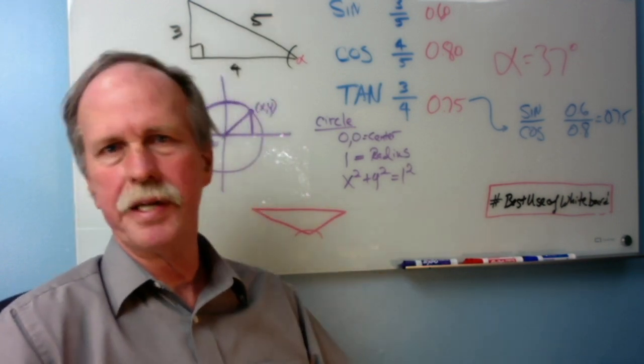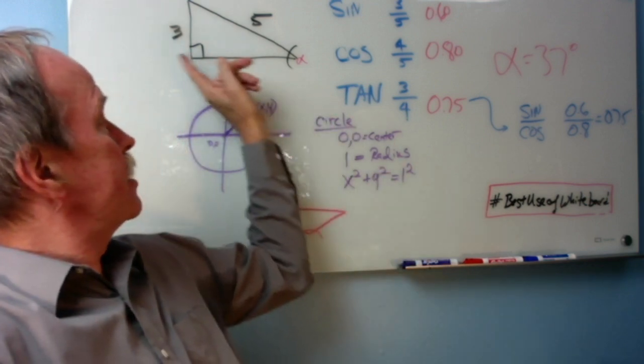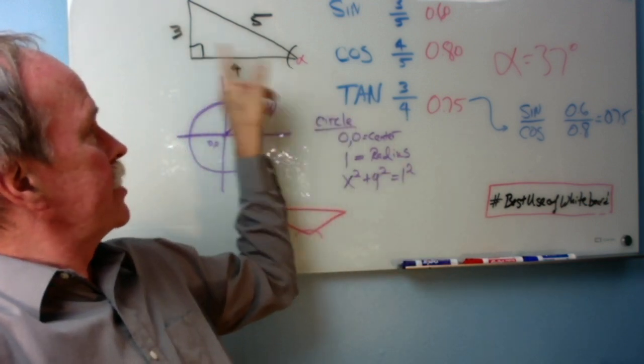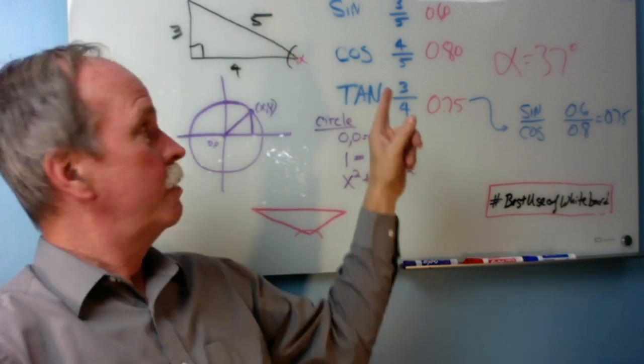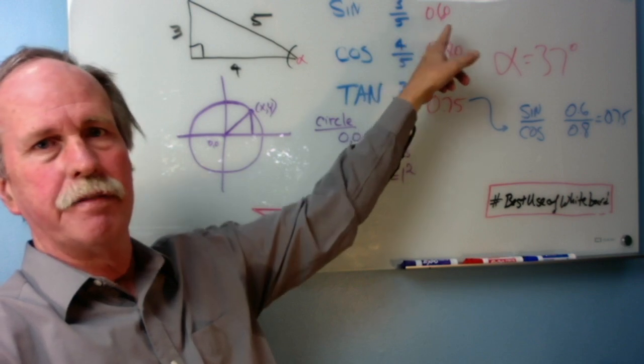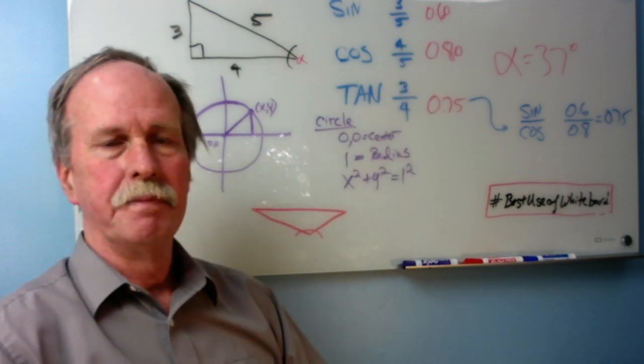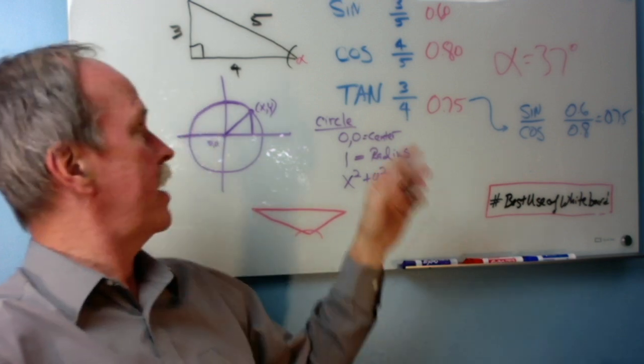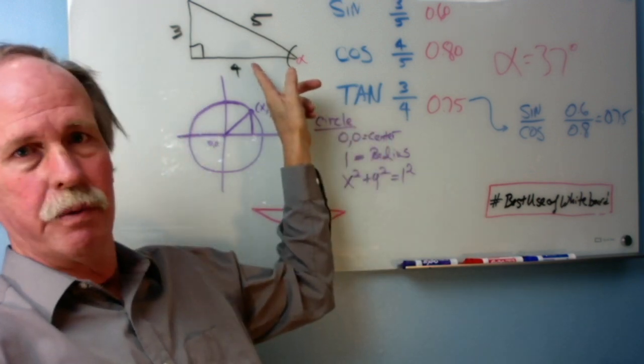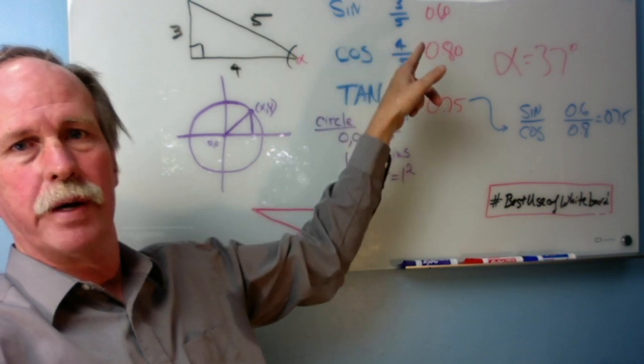What is the sine, cosine, and tangent for angle alpha? First of all, what is sine? It's the opposite side, opposite of the angle, over the hypotenuse. So our sine will be 3 over 5, or 0.6. How about cosine? It's adjacent over the hypotenuse, so it would be 4 over 5, or 0.8.